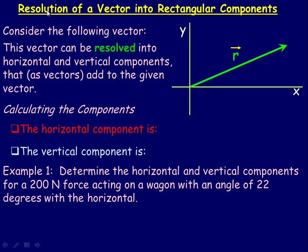In this lesson, we're going to take a look at the resolution of a vector into rectangular components. The note at the top here says this vector — we're talking about the green vector — can be resolved, which means broken down into horizontal and vertical components that are each vectors that, as vectors, add to the given vector.